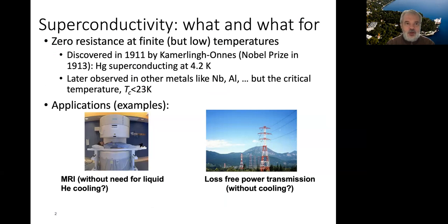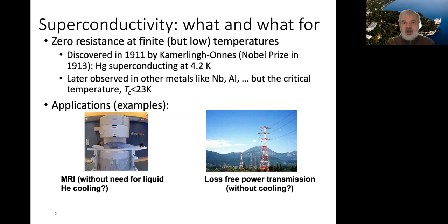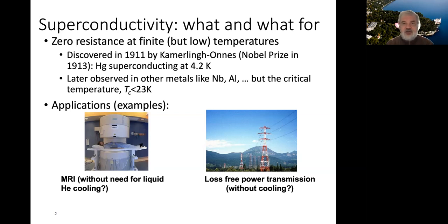The phenomenon of superconductivity was discovered by Dutch physicist Kamerlingh Onnes, who discovered that mercury conducts electric current without energy losses at temperatures below 4.2 Kelvin. It was also discovered that many other metals like niobium, aluminum, and tungsten also superconduct. However, the temperature of the superconducting transition was quite low — all these metals superconduct at temperatures below 23–24 Kelvin.